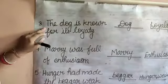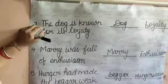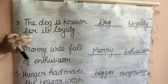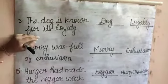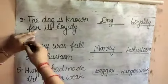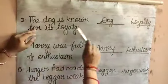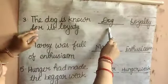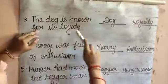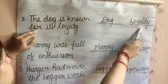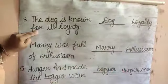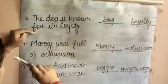Next: 'The dog is known for its loyalty.' The dog is Concrete Noun, and loyalty is Abstract Noun.